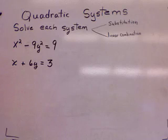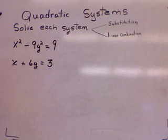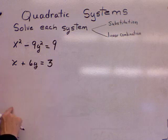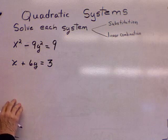Alright, another way to solve quadratic systems to get a more exact answer is to use substitution or linear combination. I'm going to show you substitution first. First you look at the two systems and see if one of them solves easily for one variable.